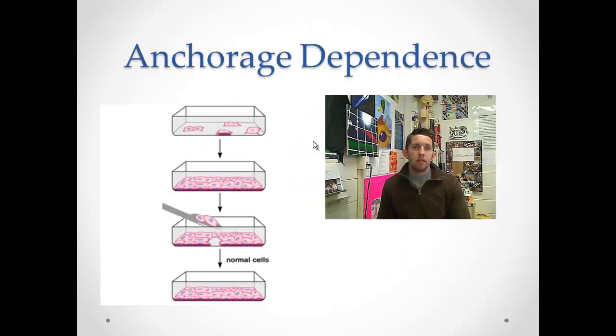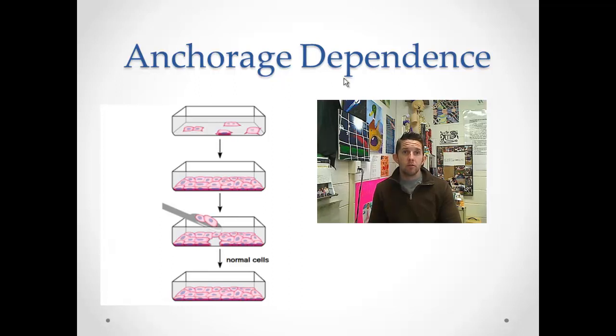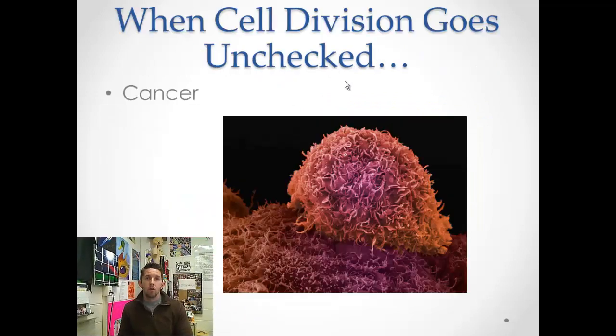Anchorage dependence is the last factor we're going to talk about. Simply put, cells need to be anchored to a surface. Normal cells need to be anchored to a surface in order to divide. If they're floating, they won't divide. And once again, remember, these are normal cells that follow these rules.